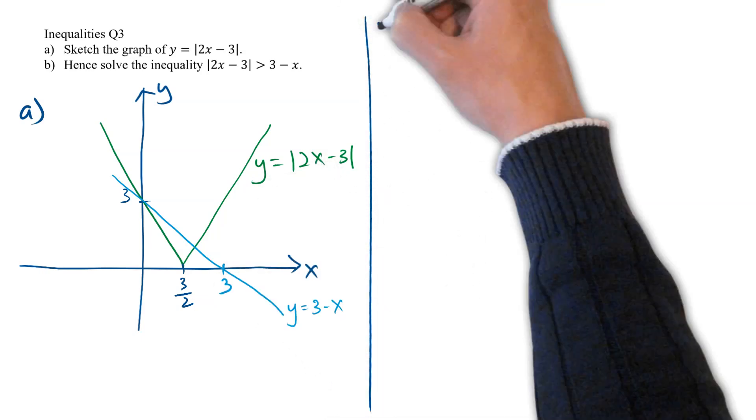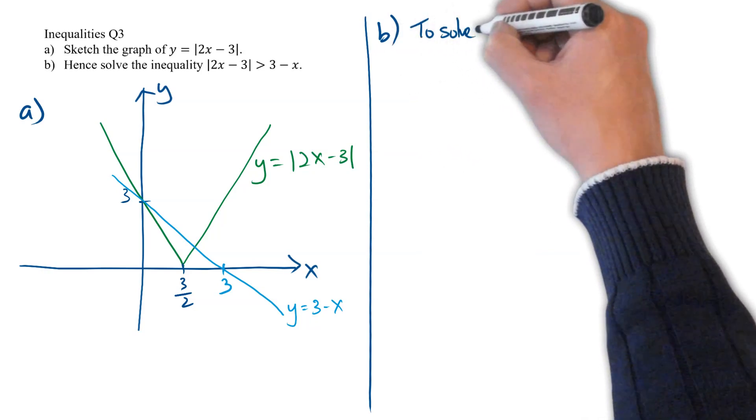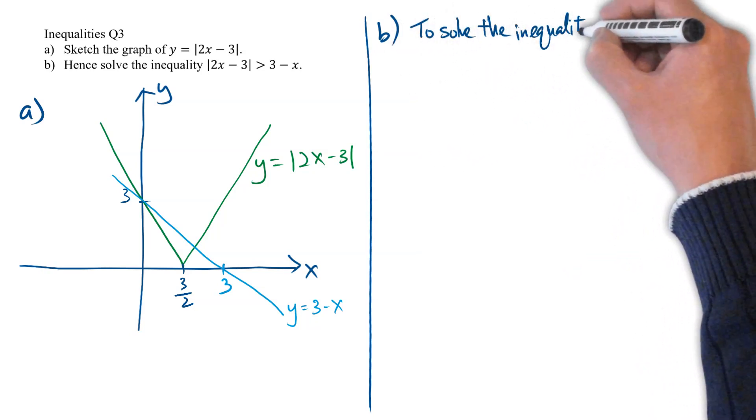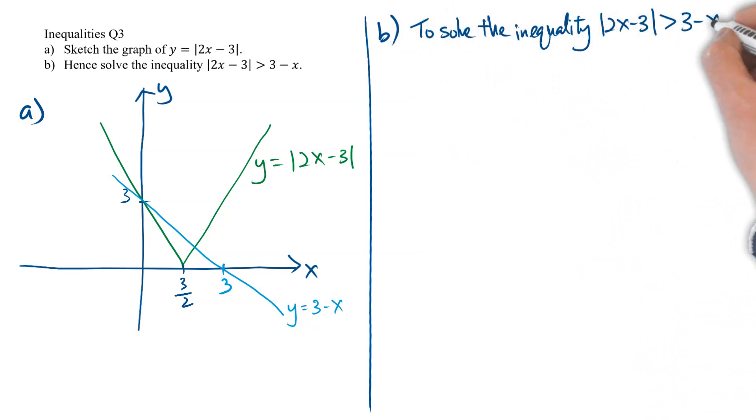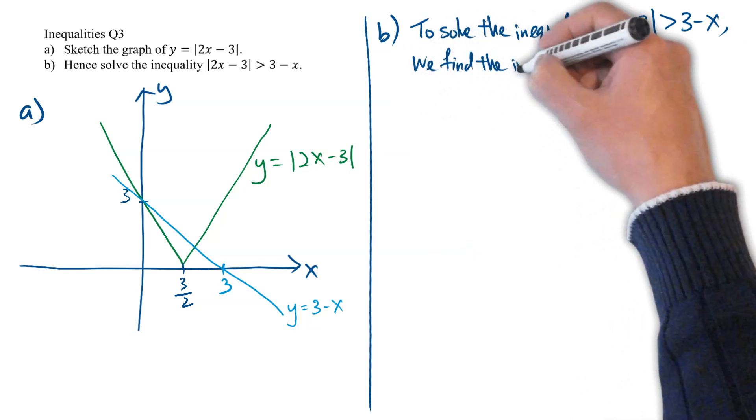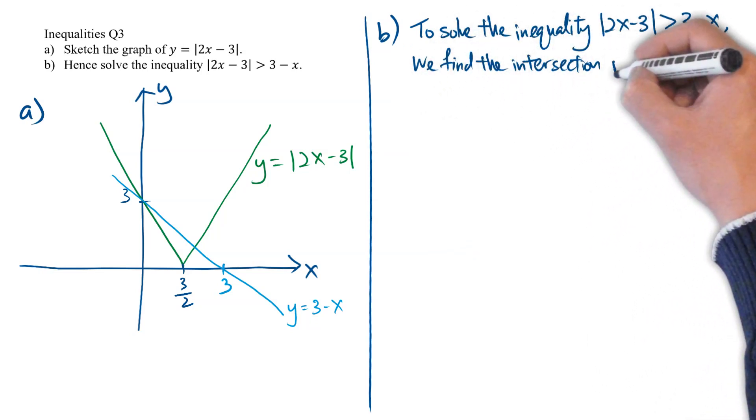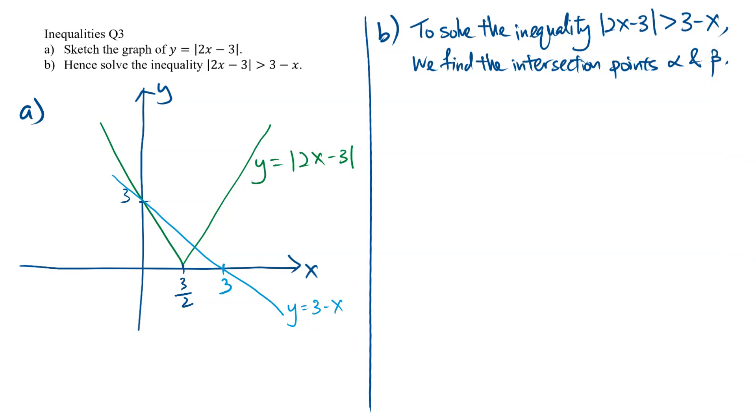With the two graphs drawn, in order to solve the inequality of modulus 2x minus 3 greater than 3 minus x, we simply have to find the intersection points between these two graphs. Let's call them alpha and beta.